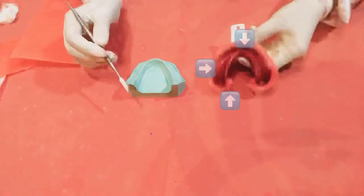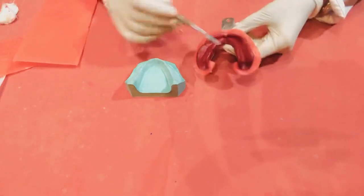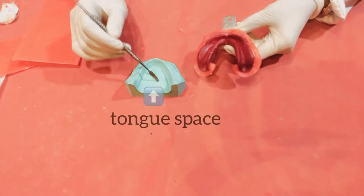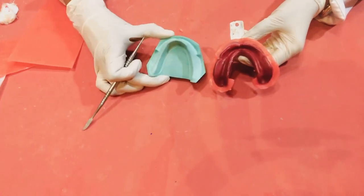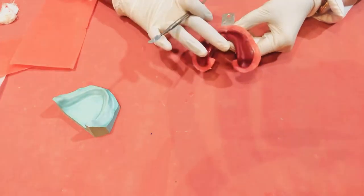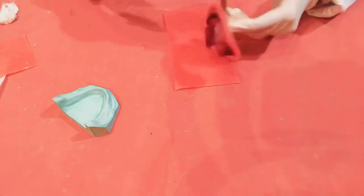Now for the lingual side, you can see that there is a tongue space in the cast. In order to create it we have to contour and seal a wax sheet to the lingual borders of the impression. This is how I do it, it's quite easy and fast this way.